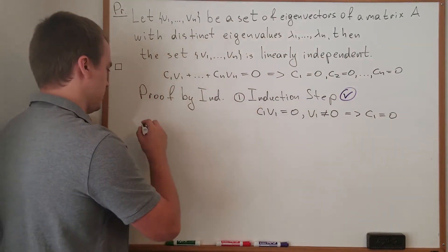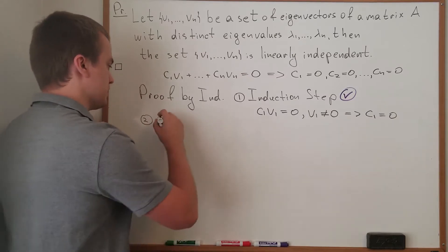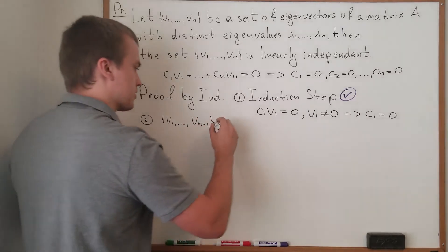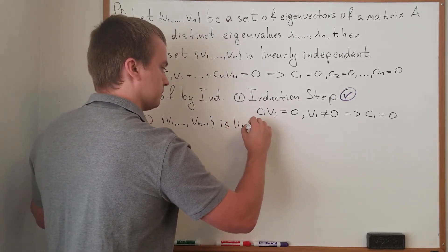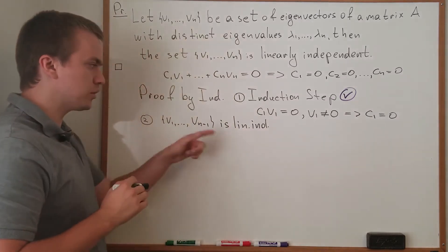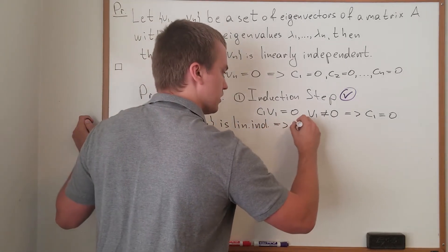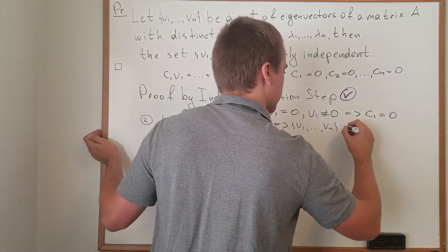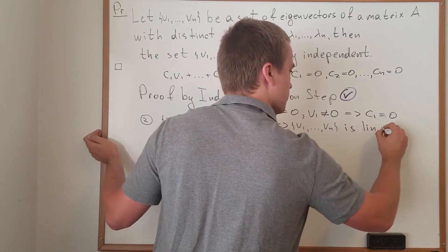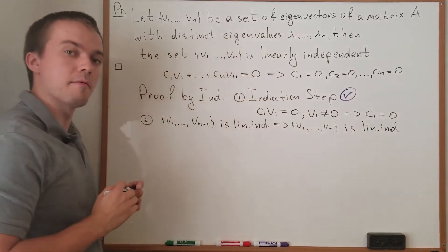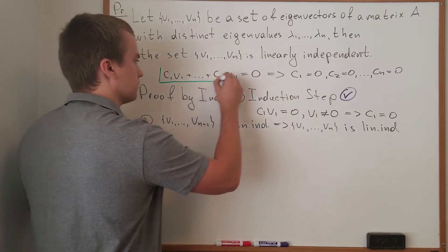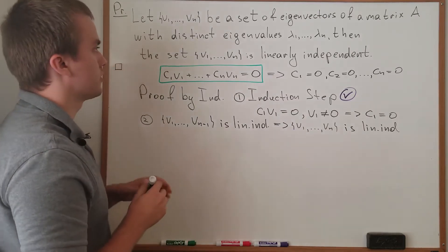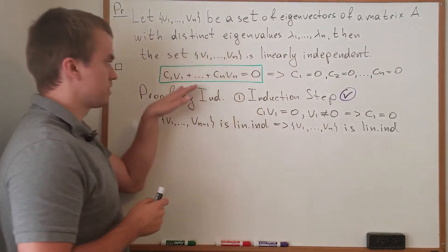Now for the inductive step. Assume that the set of n−1 eigenvectors v1 through v_{n-1} is linearly independent. We want to show that the full set of n vectors is also linearly independent. To do this, I'm going to take the expression c1·v1 + ... + cn·vn = 0 and apply the linear operator A to both sides.